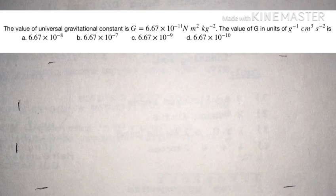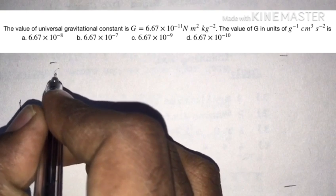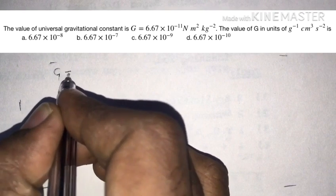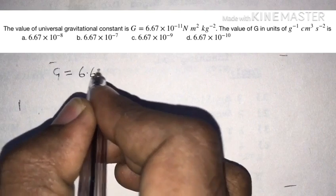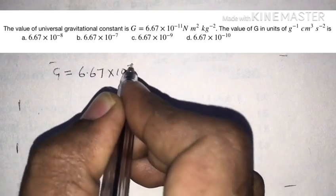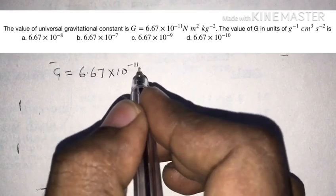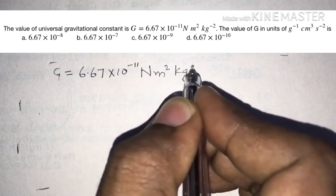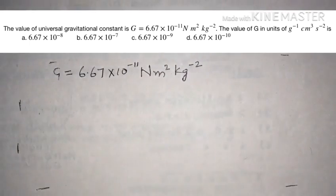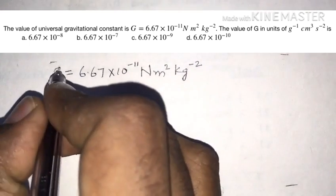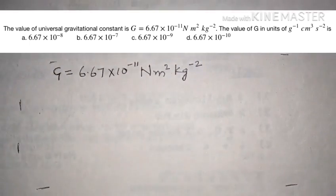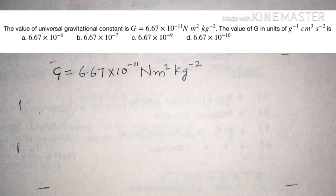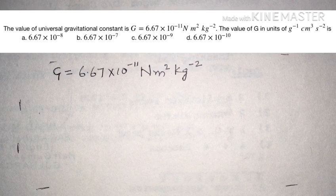The given value is G equals 6.67 into 10 power minus 11 Newton meter square per kilogram square. We have to convert this unit — that is Newton meter square per kilogram square — into the units of per gram centimeter cube per second square.